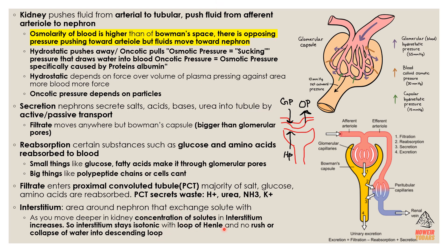The interstitium is the area around the nephron, and it exchanges solutes — salts, glucose, and amino acids — with the blood vessels there. As you move deeper into the kidney, the concentration of solutes in the interstitium increases. The interstitium stays isotonic with the loop of Henle, so there's no rush for collapse of water into the descending loop.